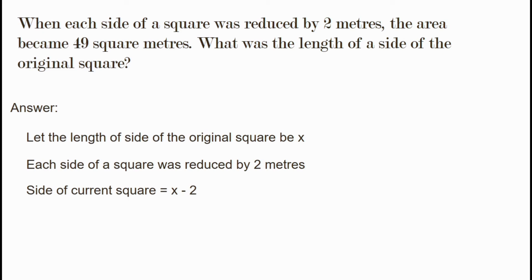So the equation is: (x minus 2) squared equals 49. We set up this equation because each side is reduced by 2, giving us x minus 2 as the new side length.